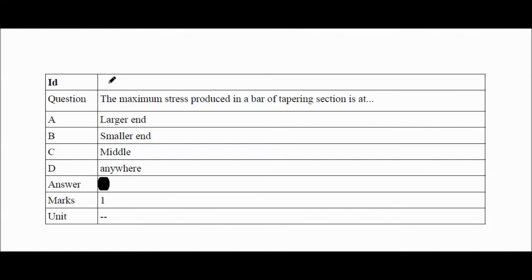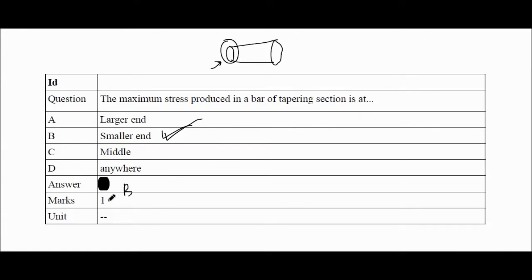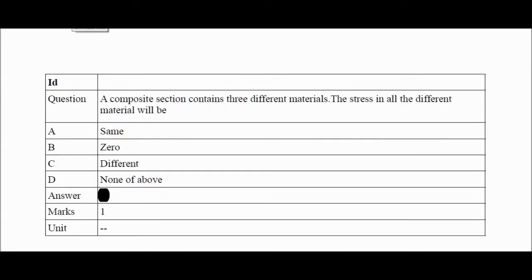Maximum stress produced in a bar of tapering section is at — logically, where the area is minimum, stress will be maximum. Therefore the answer should be at the smaller end. Answer is B.